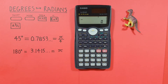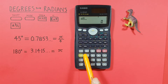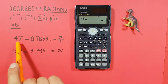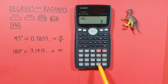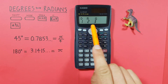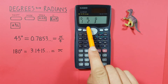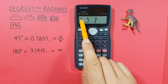Next we enter our 45 degrees, so we go 45. Now we need to tell our calculator these are degrees. To do that we press shift and then the answer key with the shift function of degrees, radians, gradians. And we're given this menu.